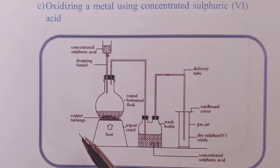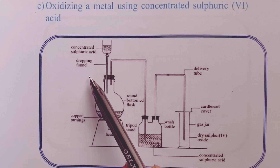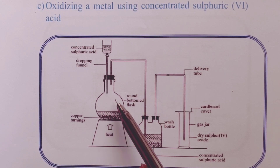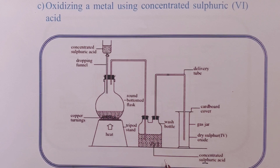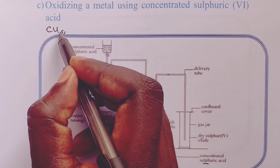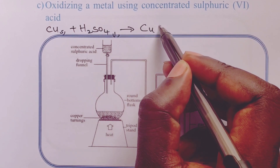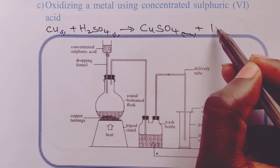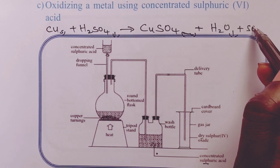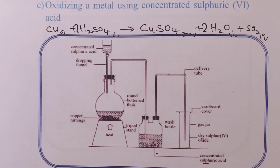Here, the metal we are oxidizing is copper, and we introduce concentrated sulfuric acid via a dropping funnel. Once our gas has been obtained, we shall pass it through concentrated sulfuric acid to dry it, and then collect a dry sample in a gas jar by the downward delivery method. The equation: copper metal reacts with concentrated sulfuric acid to give copper(II) sulfate, water, and sulfur dioxide gas, balanced with a 2 on water and a 2 on the concentrated sulfuric acid.